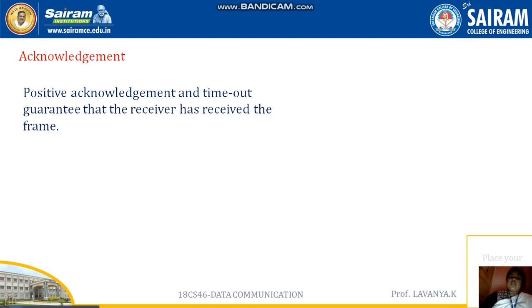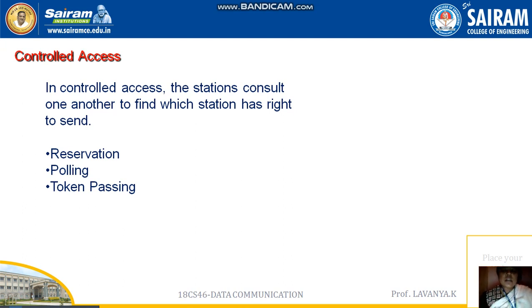For negative acknowledgement, during the transaction, a packet or frame is lost and the receiver is not able to receive the frame. The sender never receives an acknowledgement back from the receiver, so we call it a negative acknowledgement. The next method is control access, where all stations are accessed one by one to find which station has the right to send frames to the receiver.